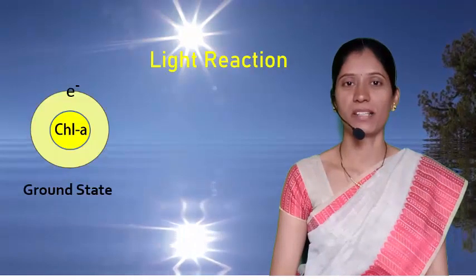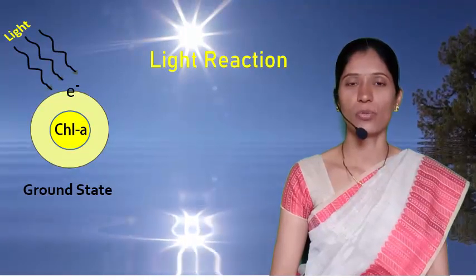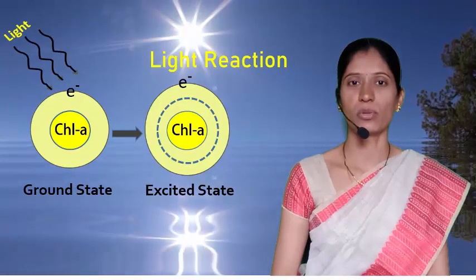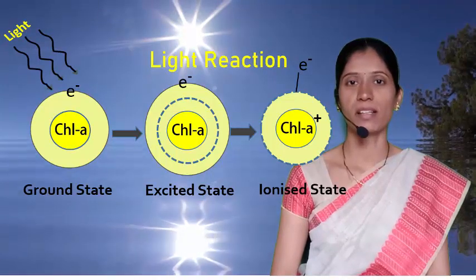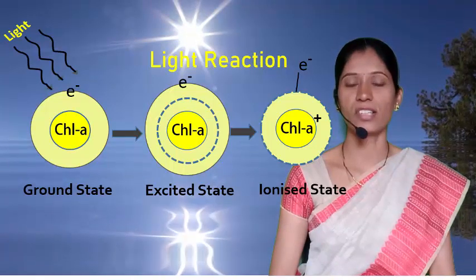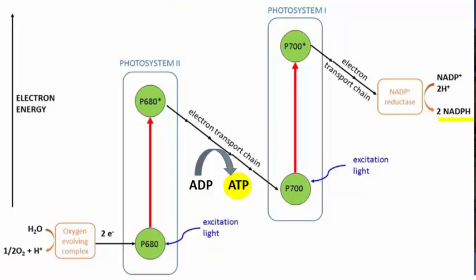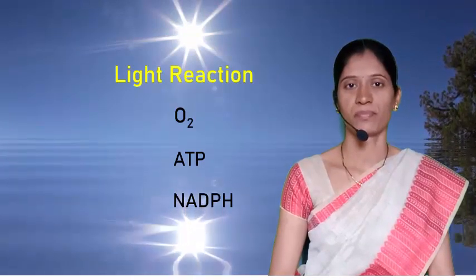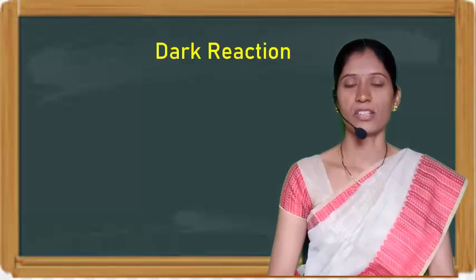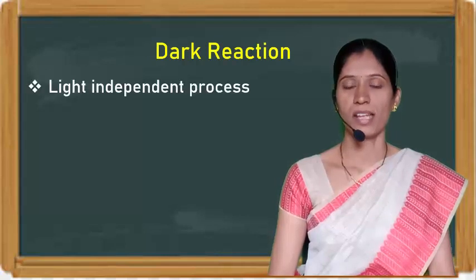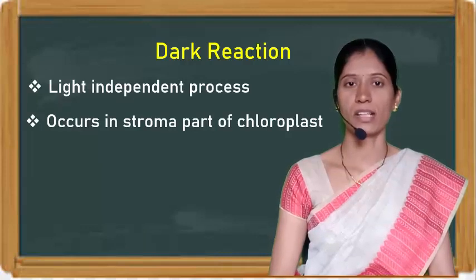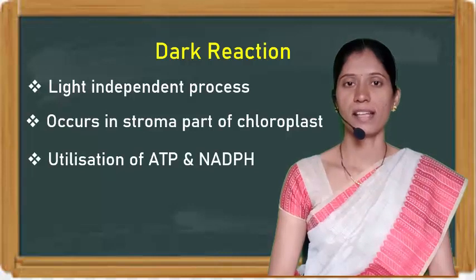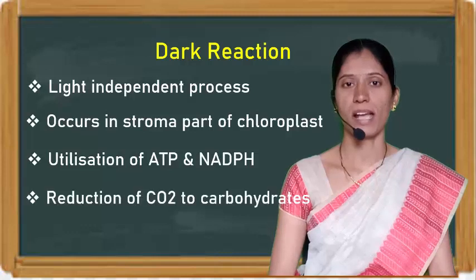During light reactions, photosynthetic pigments absorb sunlight energy. After absorbing sunlight energy, chlorophyll molecules get excited and emit energy-rich electrons to the outer orbit. This expelled electron is energy-rich and moves through Photosystem I and Photosystem II. While moving through the photosystems, the energy of this electron is conserved in ATP and NADPH form. Thus in light reactions we obtain oxygen, ATP and NADPH molecules. In dark reactions, which are a light-independent process occurring in the stroma of chloroplast, the ATP and NADPH synthesized in light reactions are utilized for the reduction of carbon dioxide into carbohydrates.